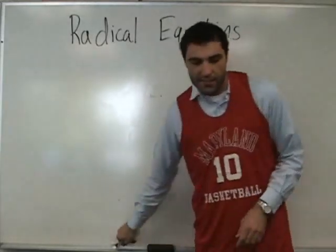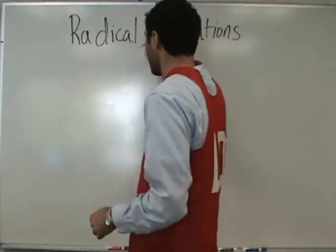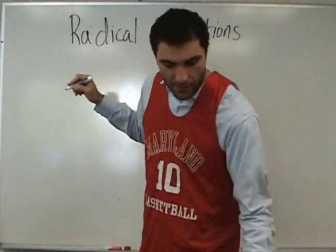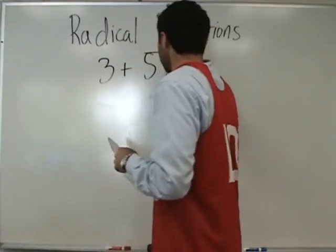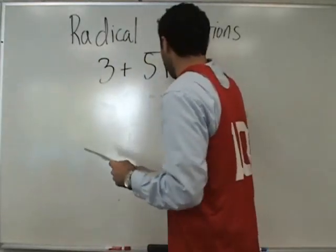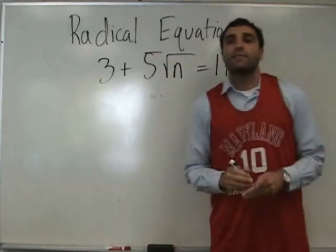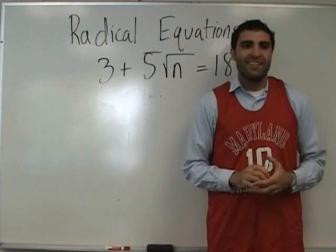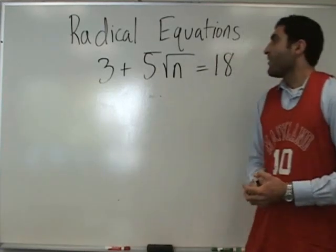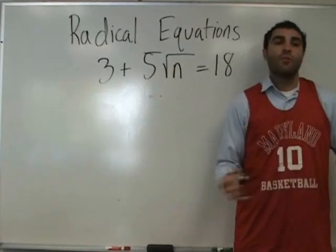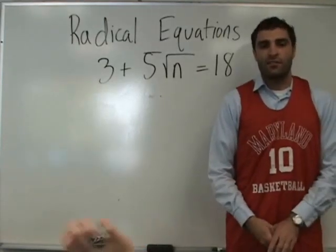Ready? This is number 3 of 5. We're on it. 3 plus 5 times the square root of n equals 18. Radical equations are very humorous. More simplification necessary. Can we isolate the radical?